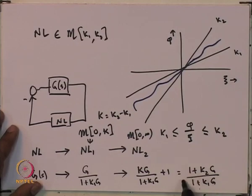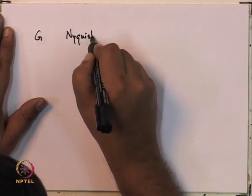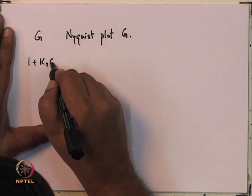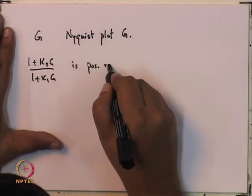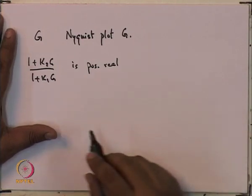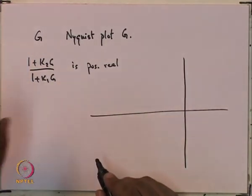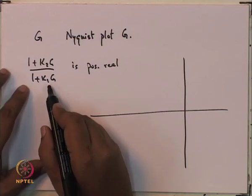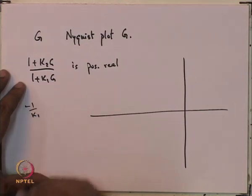What we want to check is: given G and therefore the Nyquist plot of G, we want to check whether (1 + k2·G)/(1 + k1·G) is positive real. One thing you do is look at the denominator — a pole of the system occurs when G equals −1/k1. Since k1 is less than k2, the point −1/k1 and the point −1/k2 lie on the real axis.